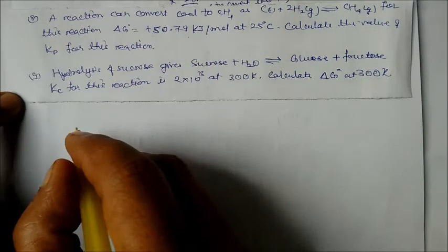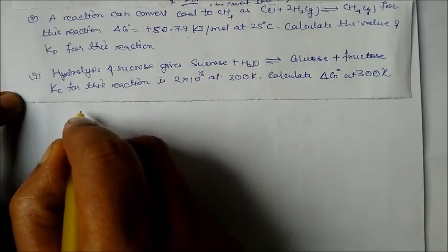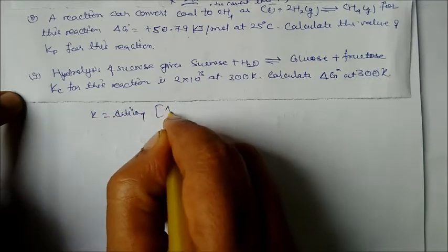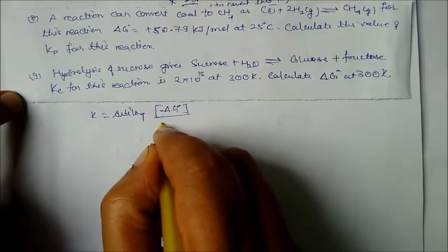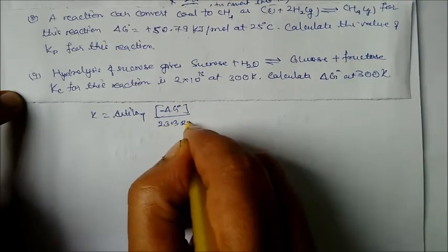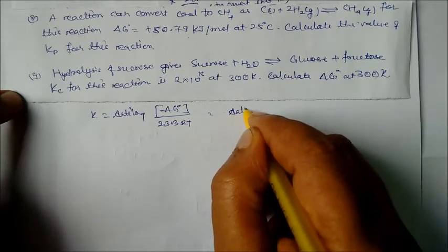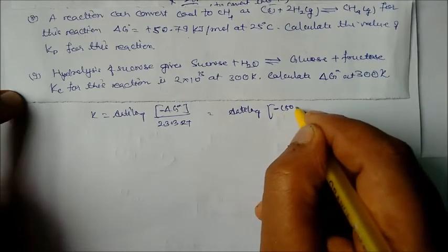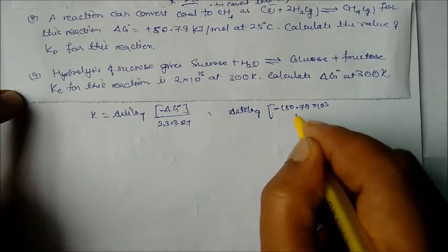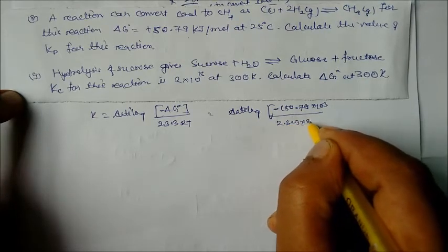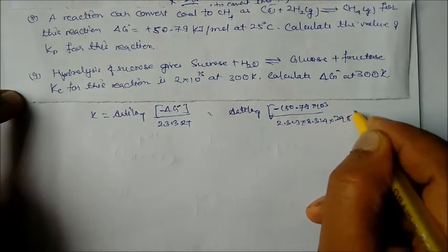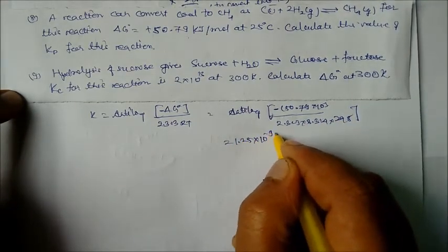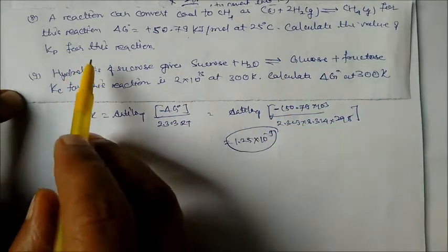Using log Kp = −ΔG° / (2.303 RT), we put in: −50.7 × 10³ / (2.303 × 8.314 × 298), and solving gives Kp = 1.25 × 10⁻⁹. This is the Kp value for this reaction.